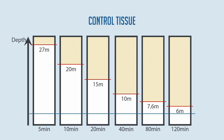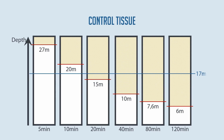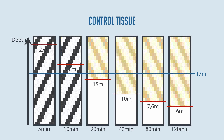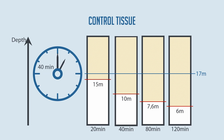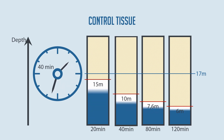Let's take a look at a specific dive at a depth of 70 meters. We can see from the graph that the pressure at 70 meters is below the M-values of the 5 and 10 minute compartments. We can therefore ignore both of those tissues in the following analysis. Let us also assume that we remain at this depth for 40 minutes.